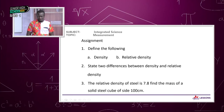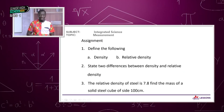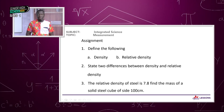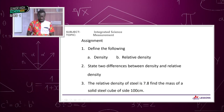Today we learned about densities and relative densities. Density is the ratio of the mass per unit volume of a substance. We determined the density of regular and irregular objects and did calculations. Density has a unit of kilogram per meter cube. We also covered relative density, which has no unit, and determined relative densities using the relative density bottle. I am George Loco, your facilitator. Thank you.